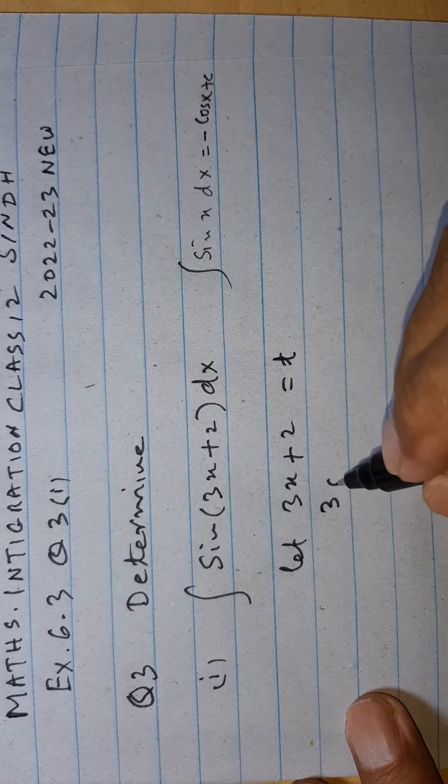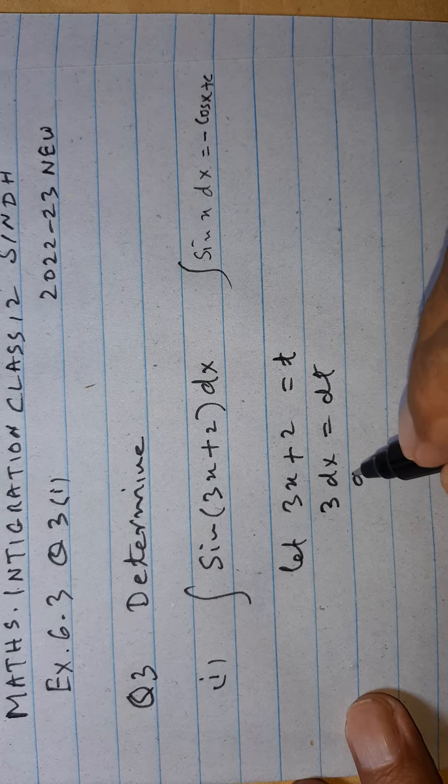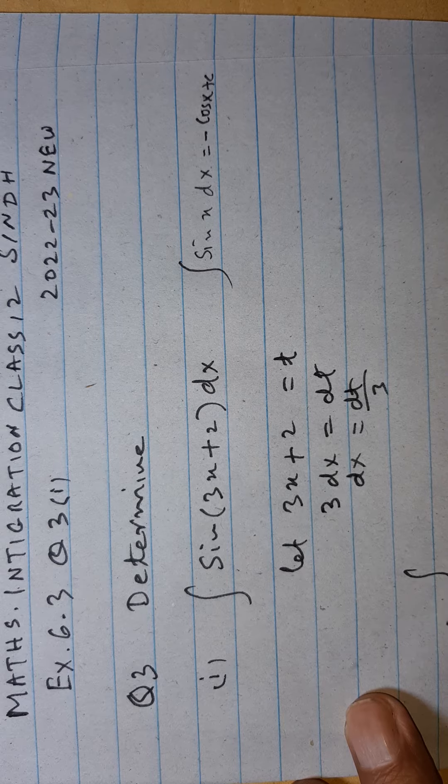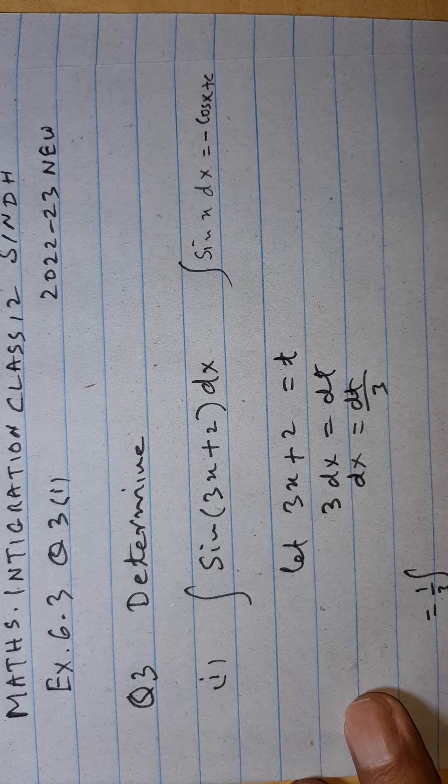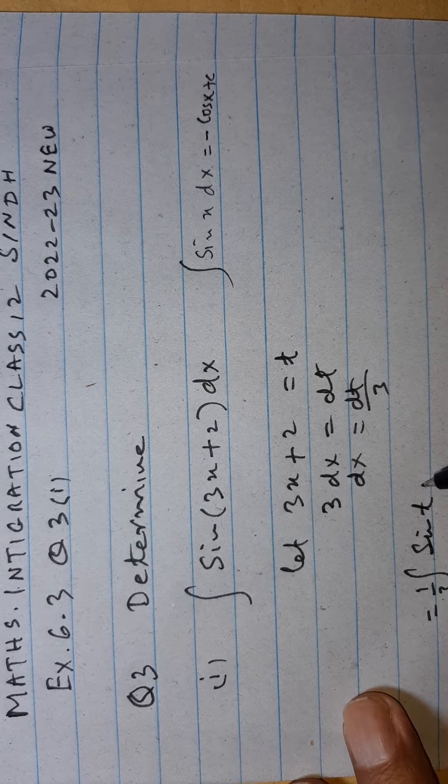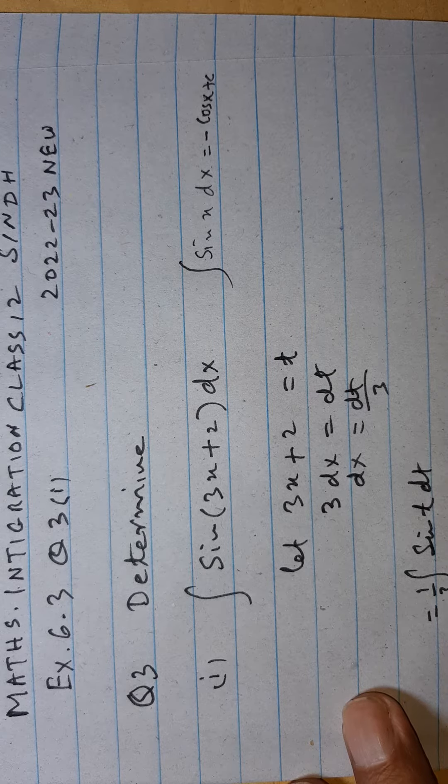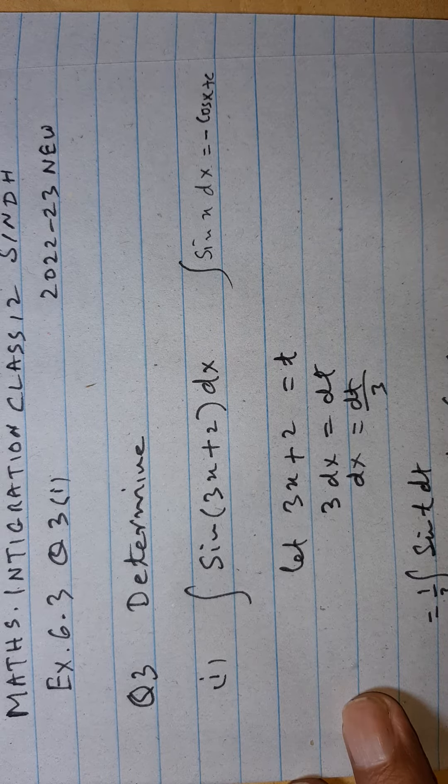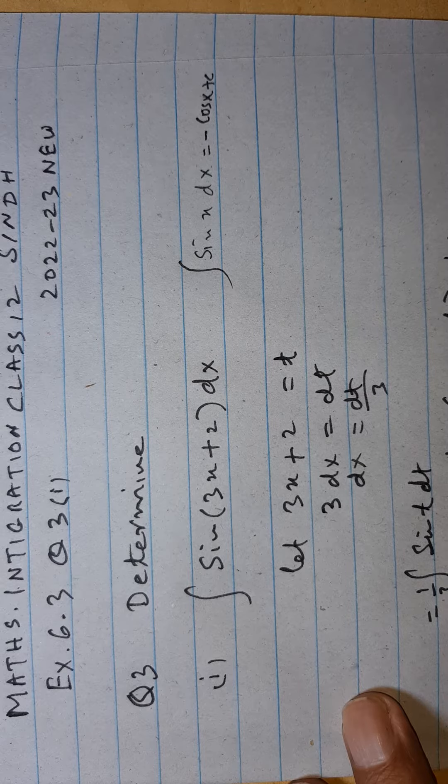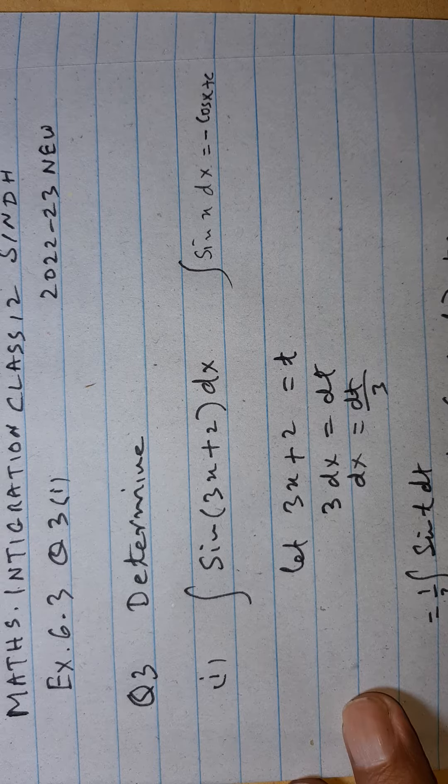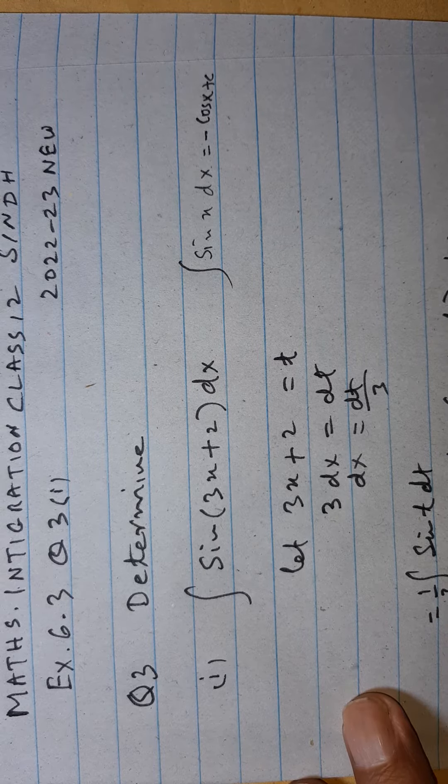3 dx is equal to dt, so dx is equal to dt by 3. We can write 1 by 3 integral sin t dt, which is 1 by 3 times minus cos t plus c. This is minus 1 by 3 cos(3x plus 2). That is the answer.